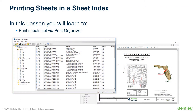Printing Sheets in a Sheet Index. Once sheets are added to a sheet index, you can print all or a subset of the sheets by clicking the Print Organizer icon in the Explorer's Sheet Index tab. Explorer seamlessly integrates with Print Organizer in a variety of ways to make it easy for you to print your project data. In this section, you will learn to print a Sheet Set via Print Organizer.